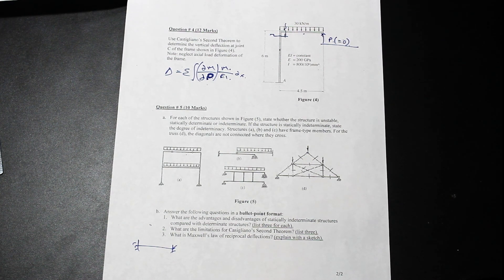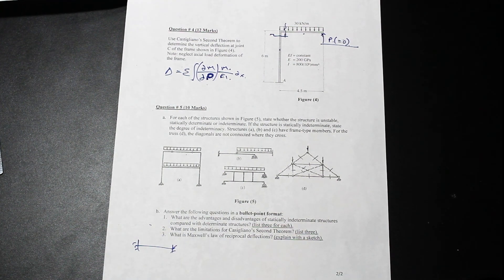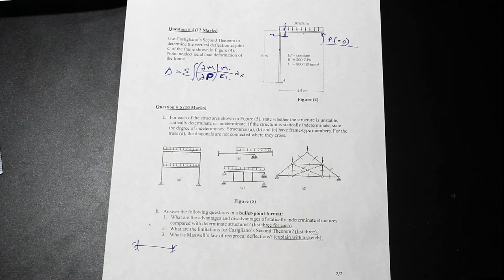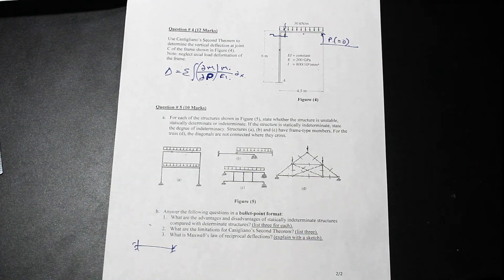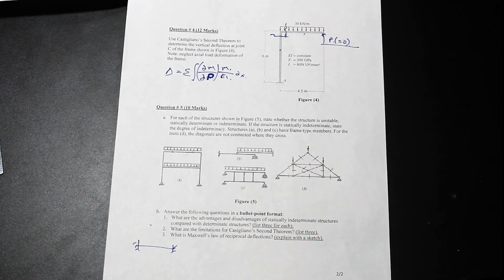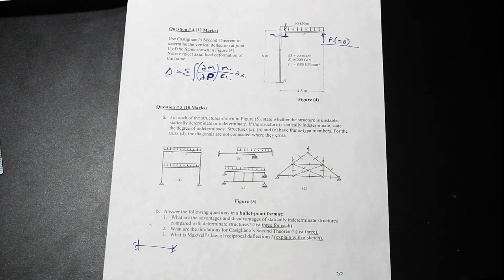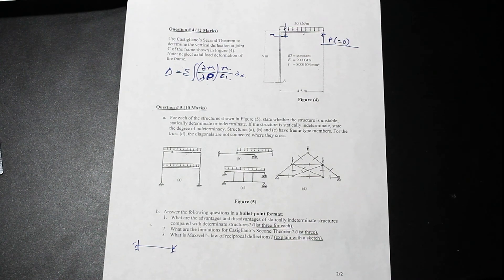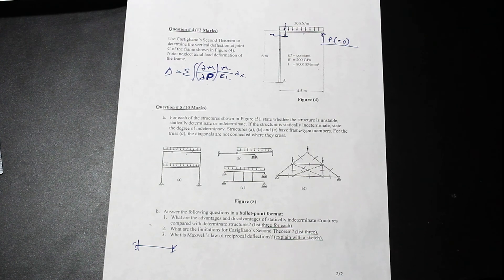And what are the limitations for Castigliano's second theorem? A couple of them would be, you know, Castigliano's second theorem, there needs to be, the material needs to be linearly elastic and, you know, the structure needs to be determinate. So these kinds of questions are, you know, it's important for these to read the book, read the section that you're studying and really kind of understand what it is that, the theories behind these, because if they ask you these, you do need to know that.